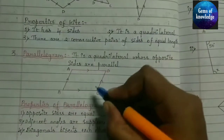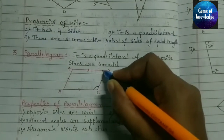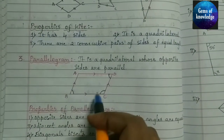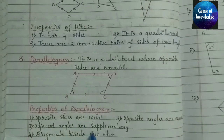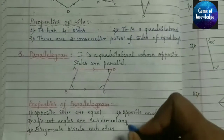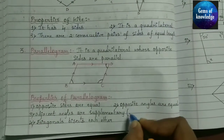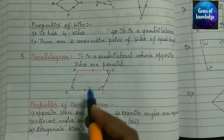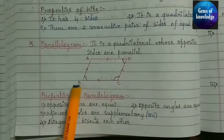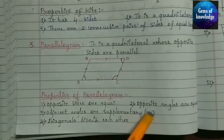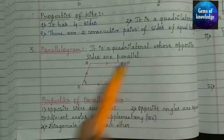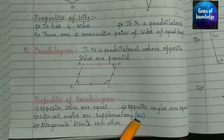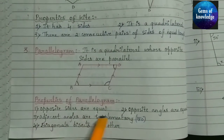What do we mean by adjacent angles? Angle C is the adjacent angle for angle D, and also the adjacent angle for angle B. So angle B plus angle C will be supplementary, meaning they add up to 180 degrees. Similarly, if we add angle C and angle D, the total is also 180 degrees. So adjacent angles are supplementary.